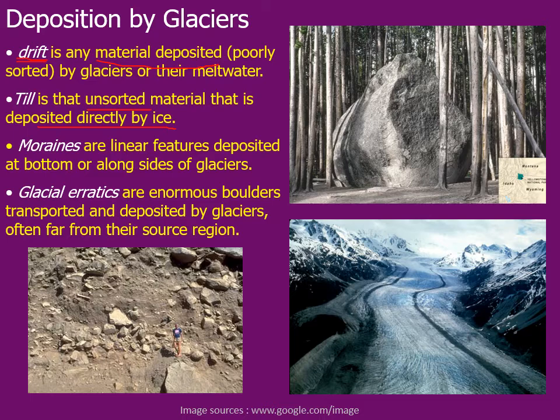Here you can see the glacial ice mass — the white-colored portion — and at the side these black-colored portions are basically glacial tills. Here you can also see a glacial till deposit in this picture — there are different-size rock particles: one large-size particle, one fine, and even more fine-size particles. This kind of mixture of different-size particles is known as unsorted, and if deposited directly from glacial ice mass, they are known as till.